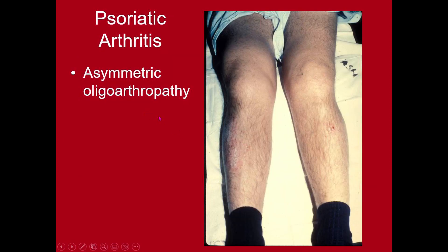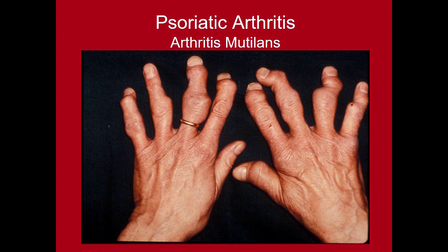Psoriatic arthritis can present as an asymmetric oligoarthritis with just one or a few joints involved, similar to reactive arthritis. In this picture we see swelling of the knees, right greater than left, and there is a psoriiform plaque on the left foreleg. This is the peculiar subset called arthritis mutilans, which can be devastating and lead to great loss of function, and x-rays will show a great deal of joint damage.